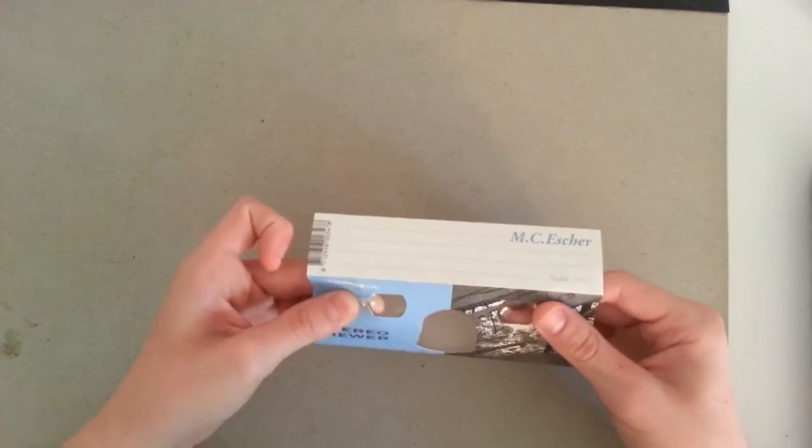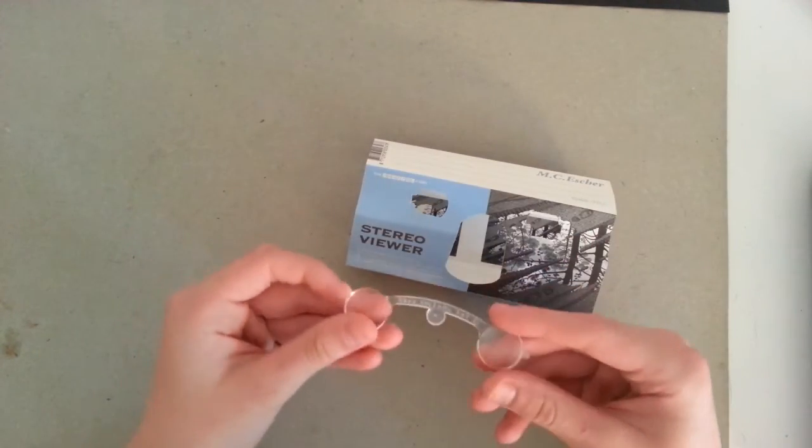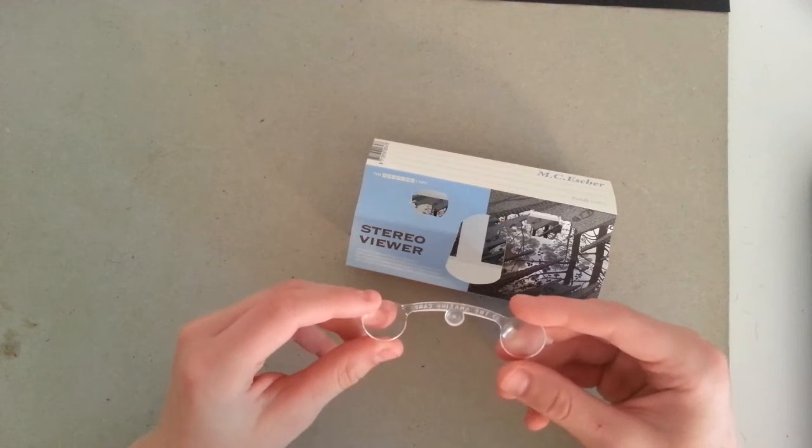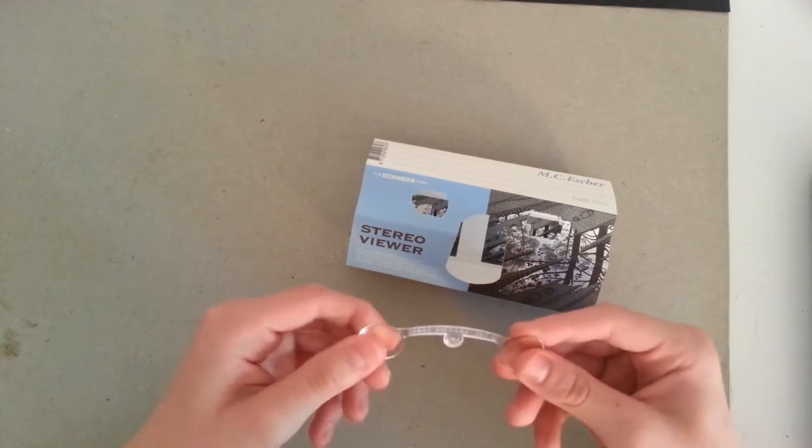What you want to do is pop out the lenses of the stereo viewer. Like this. And generally there's only two styles for the stereo viewer. There's this kind of ridge style and then there's single lens style.